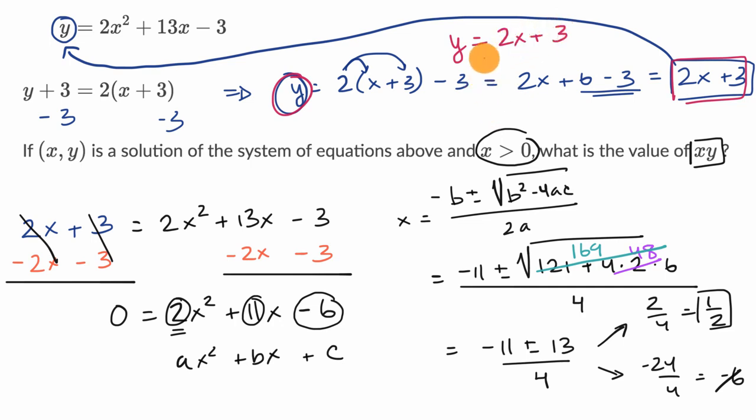So if X is equal to one half, this is equal to two times one half plus three. Well, that's just equal to one plus three, which is equal to four. So when X is one half, Y is equal to four.